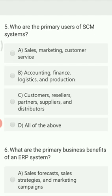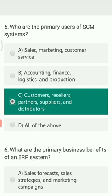The next MCQ is: who are the primary users of an SCM system — that is, supply chain management system? Option A is sales, marketing, and customer services. Option B is accounting, finance, logistics, and production. Option C is customers, resellers, partners, suppliers, and distributors. Option D is all of the above. The right option is Option C — customers, resellers, distributors, suppliers, and other partners.